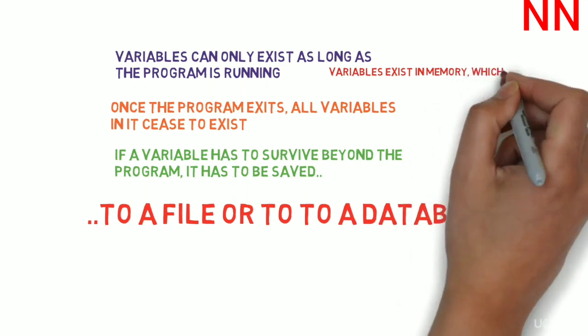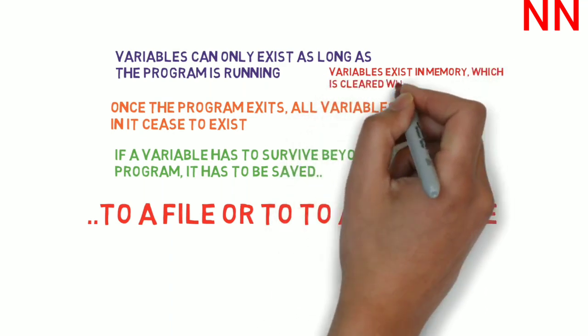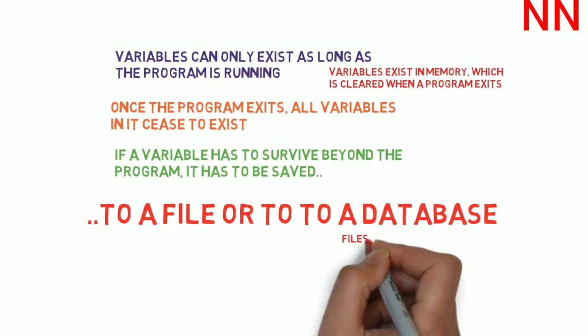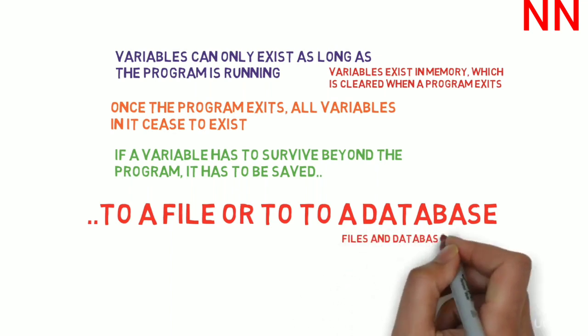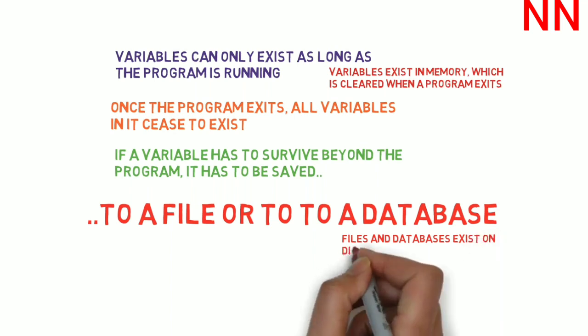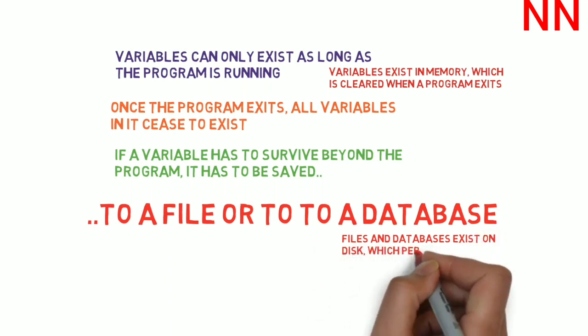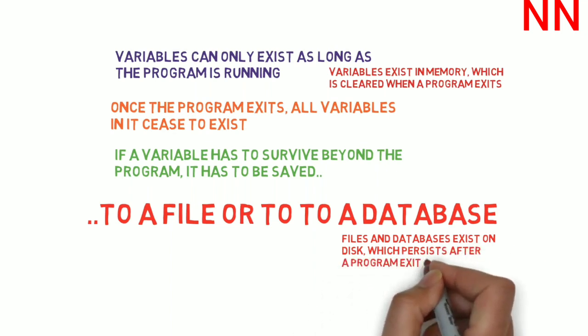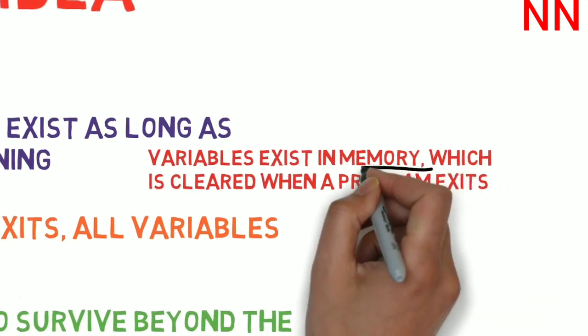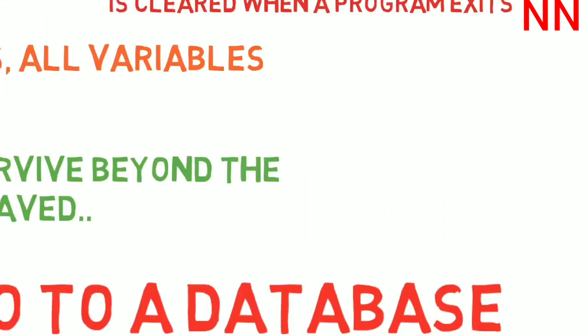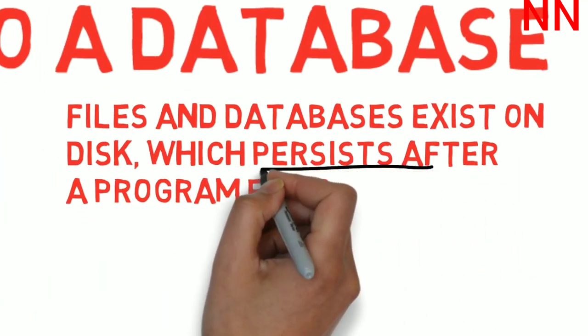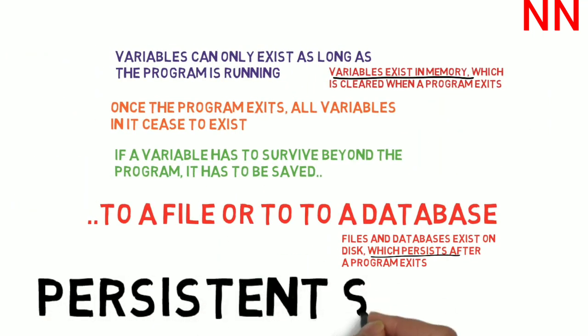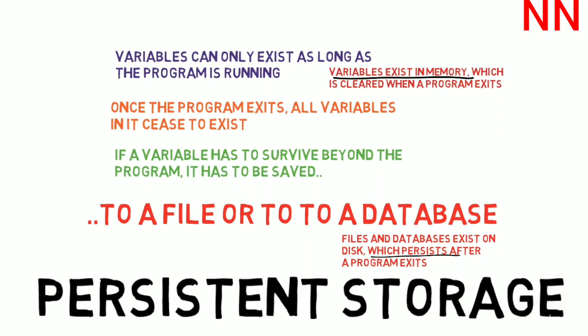So, in a program, variables exist in memory, which is cleared when the program stops running. This is why if you use dictionaries or lists, you would have to keep the program running forever. Files and databases exist on disk, which persists. That is the data stored in the file or database still exists on the disk even after the program exits. So, the key thing why dictionaries and lists are a rubbish idea is that they are not persistent storage. You need persistent storage for a program like a bank ATM.